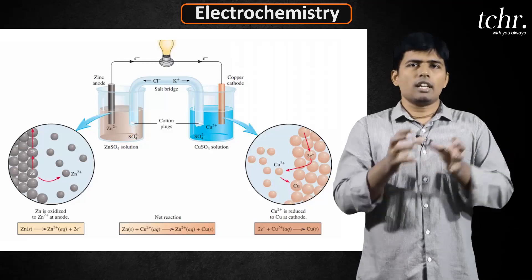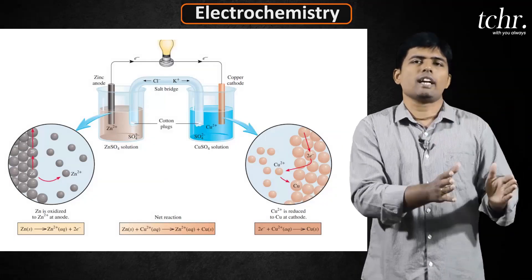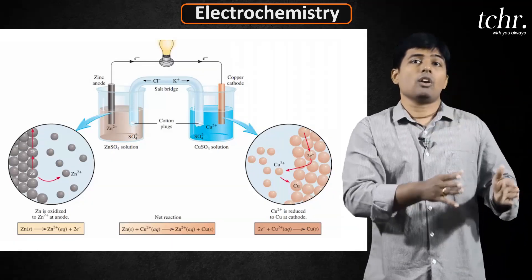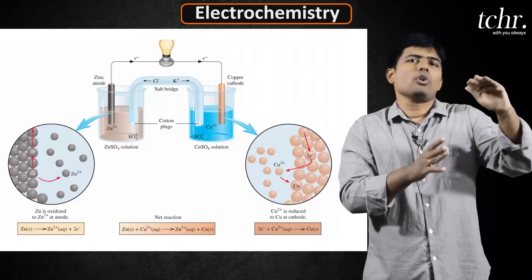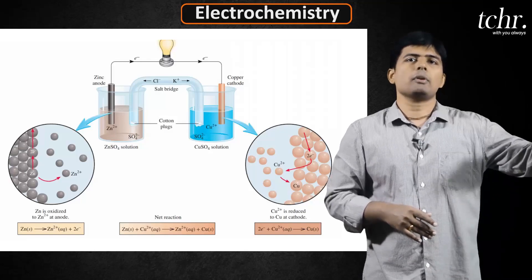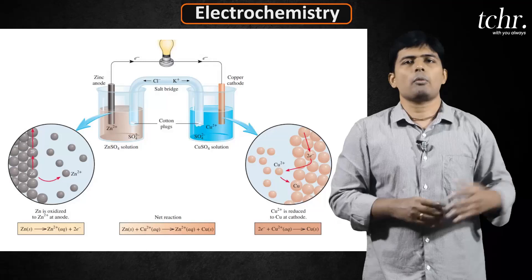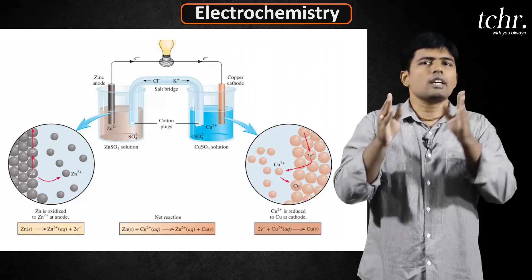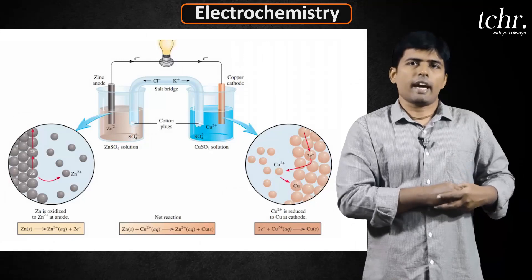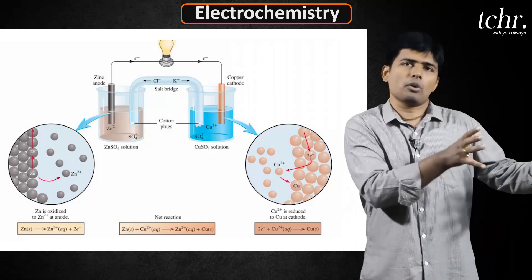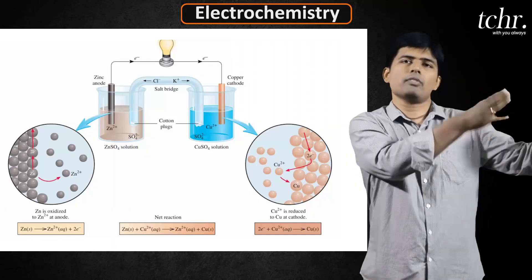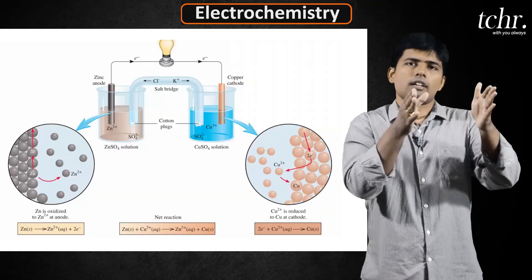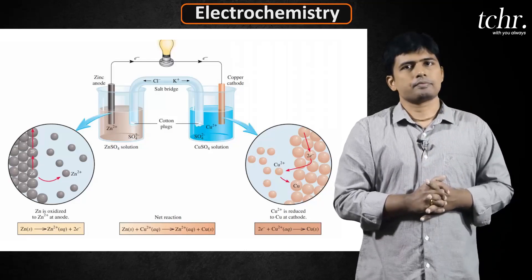Zinc becomes Zn2+ giving behind two electrons. Those two electrons get accumulated on cathode. These two electrons get accumulated on anode. These electrons, they start flowing towards cathode. Because at cathode, we have requirement of electron for copper 2+ to become copper. At zinc anode, continuously zinc metal gets converted to Zn2+ ion. And at cathode, continuously copper 2+ ion from the solution takes two electrons and gets deposited on the electrode. At cathode, electrode goes on thickening. And at anode, electrode basically goes on losing its mass.